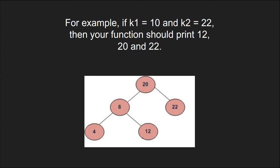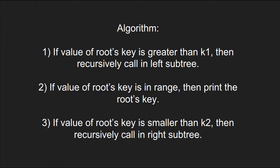Now let us see the algorithm. If value of root's key is greater than k1, then recursively call in the left subtree. If value of root's key is in range, then print the root's key. If value of root's key is smaller than k2, then recursively call in the right subtree.